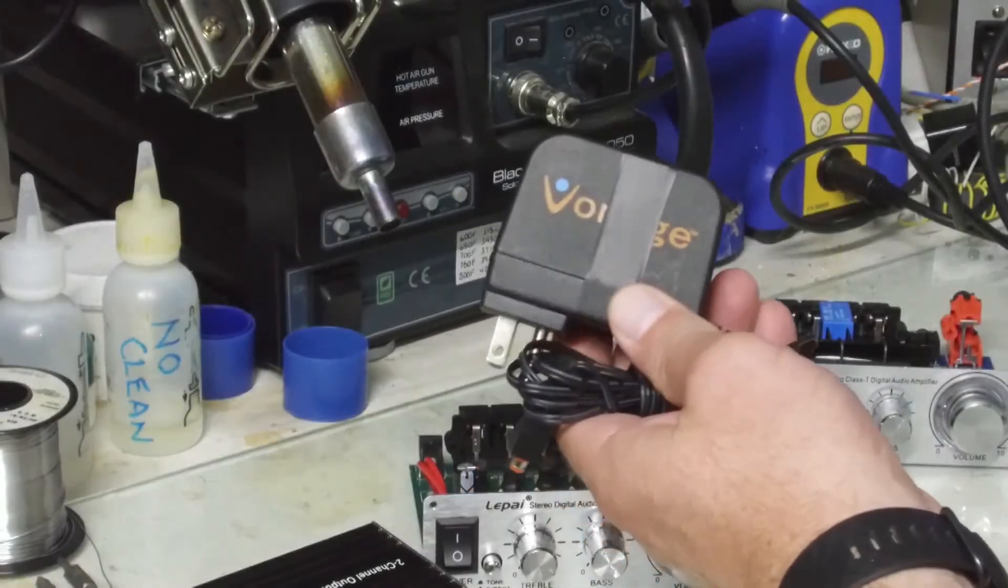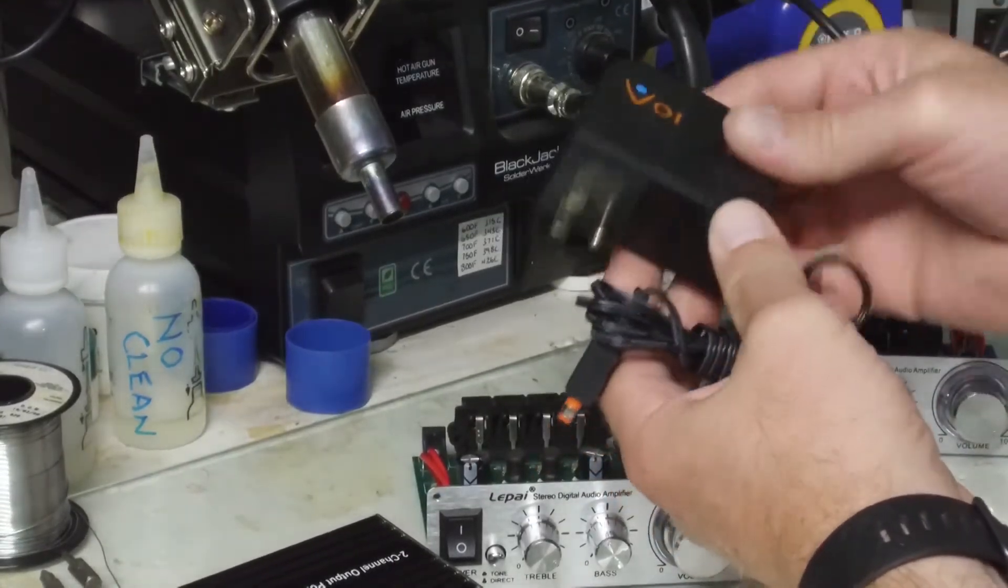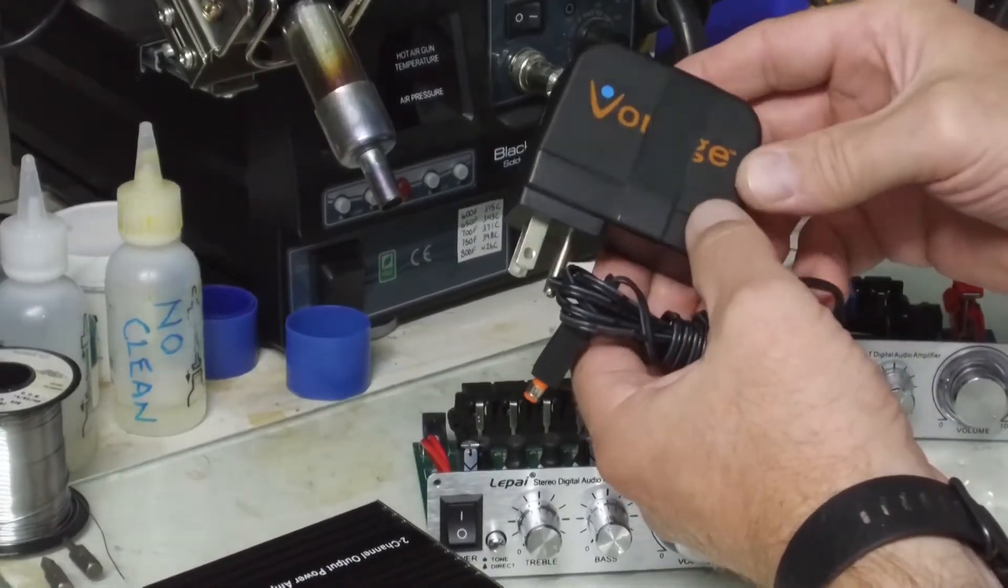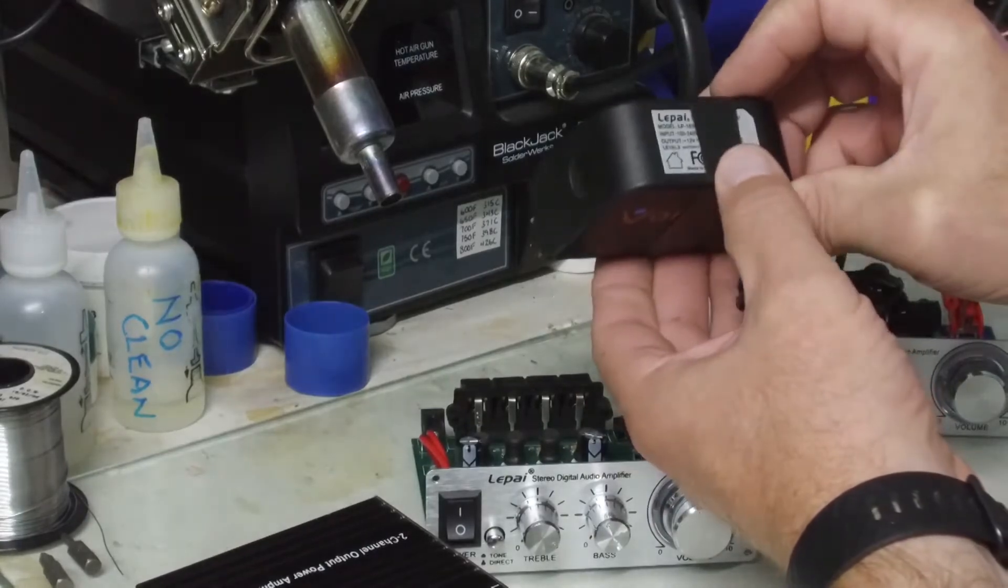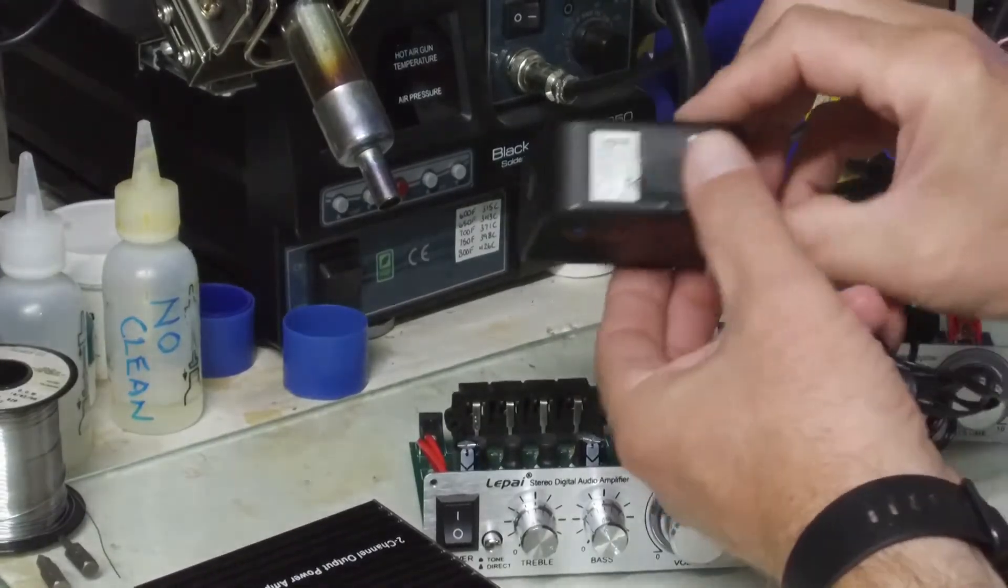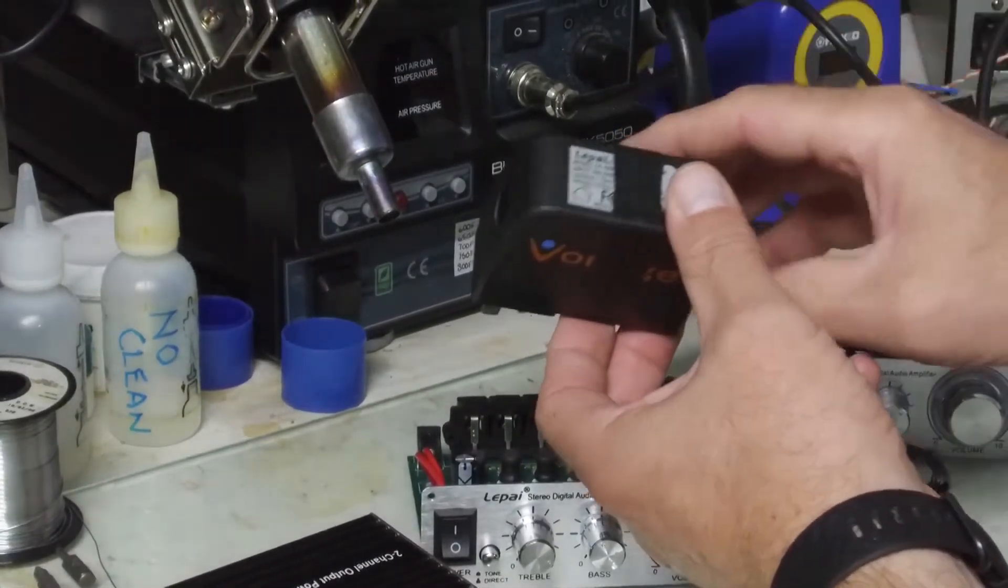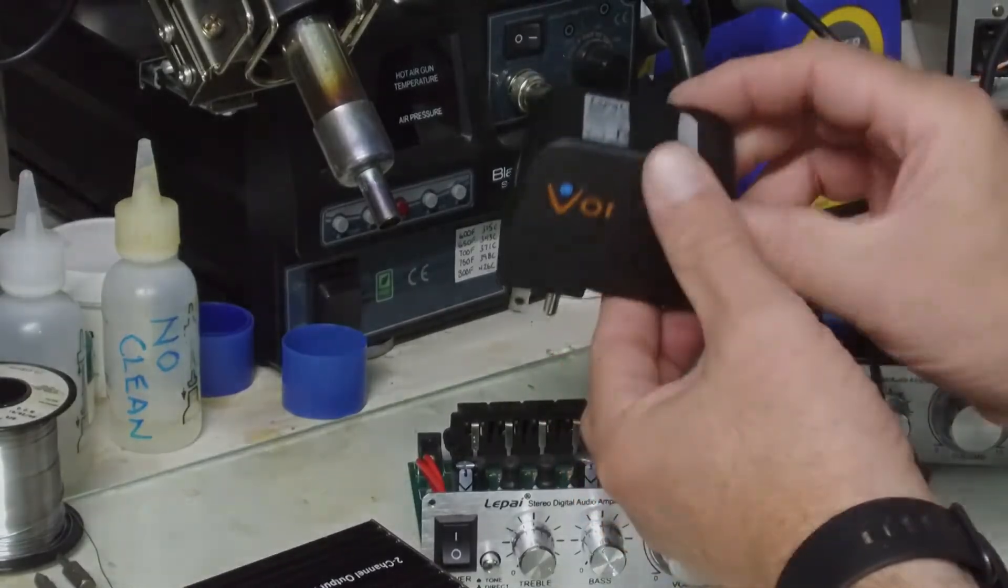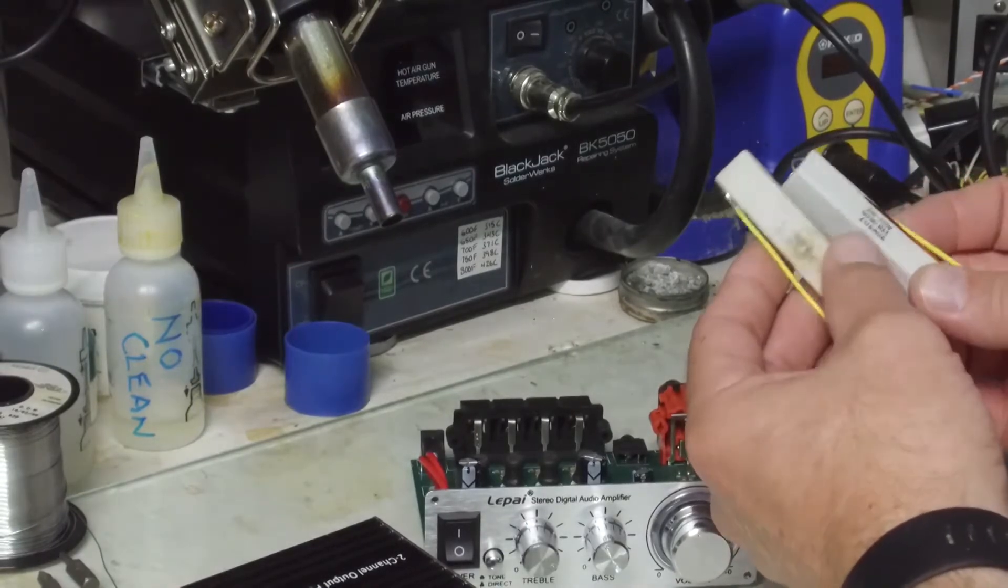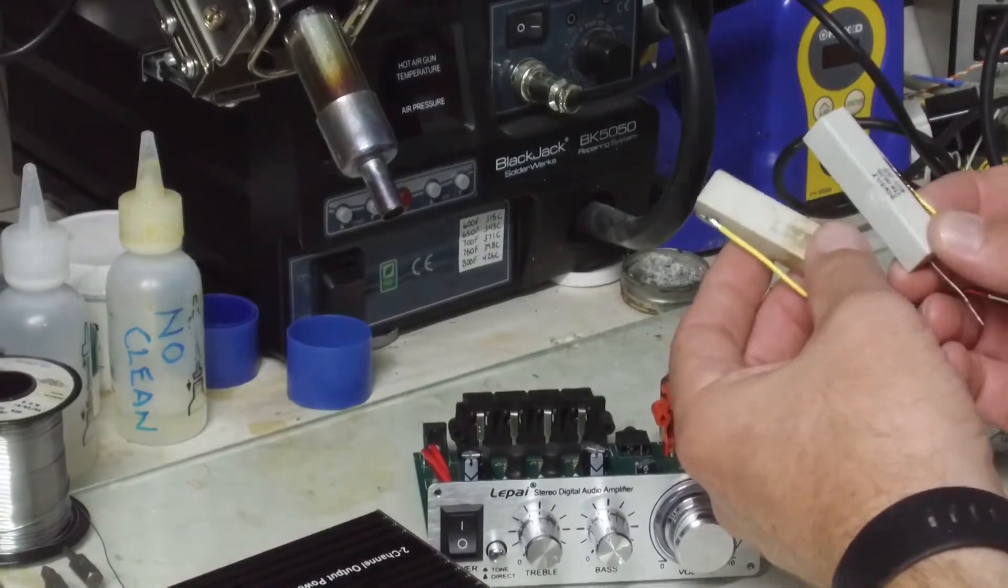The wall wart that was supplied is actually a Vonage branded wall wart rated for 12 volts, 3 amps. I've got a little bit of electrical tape on here because when I first got this, there was something rattling inside. I popped it open and there was a little piece of plastic that fell out. All of the measurements will be made with an 8 ohm load, and we will primarily use a 100 millivolt input signal.